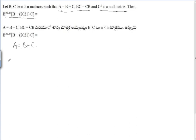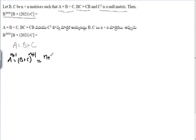We need to find the value of A^(n+1). That is A^(n+1) = (B + C)^(n+1). Applying the binomial theorem to (B + C)^(n+1), we get the expansion: (n+1)C₀ · B^(n+1) + (n+1)C₁ · B^n · C + ...